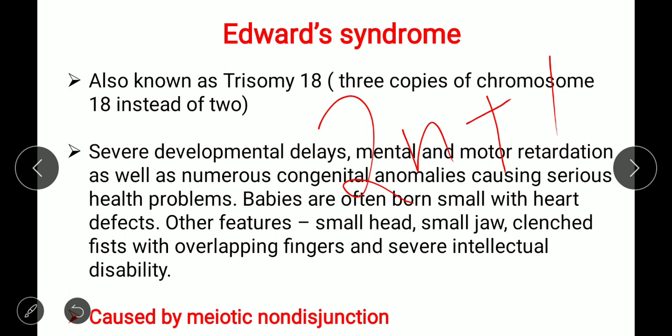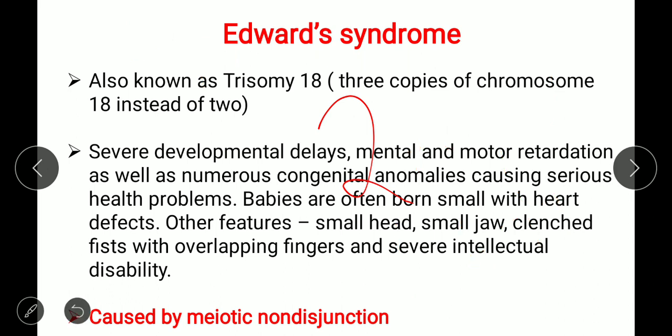Tetrasomy means 2n plus 2, monosomy means 2n minus 1, and nullisomy means 2n minus 2. For Edward syndrome, 2n plus 1 means the normal 46 chromosomes gain one extra, giving 47. It is called trisomy 18 because there are three copies of chromosome 18 instead of the normal two.